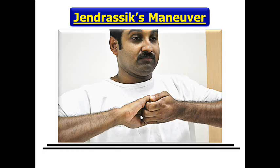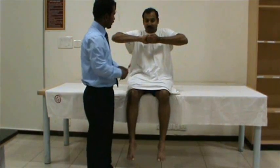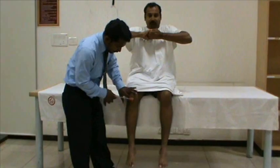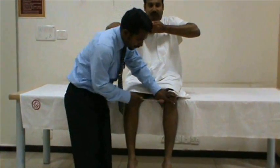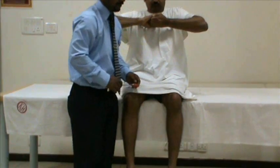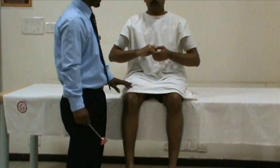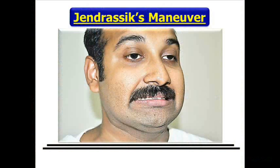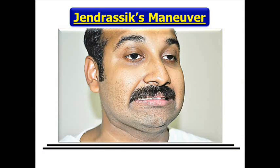Jendrassik maneuver, or reinforcement, is done whenever a reflex appears to be absent. For knee and ankle reflexes, ask the subject to interlock the fingers and pull one hand against the other on your command immediately before you strike the tendon. To reinforce upper limb reflexes, ask the subject to clench the teeth or to make a fist with the contralateral hand. This maneuver increases the sensitivity of muscle spindles.